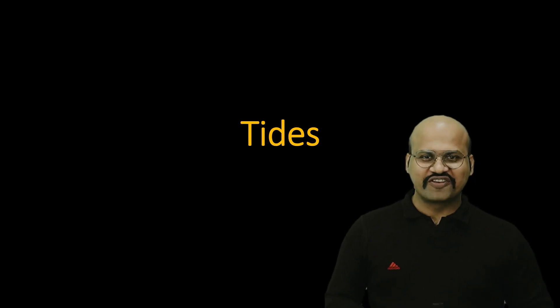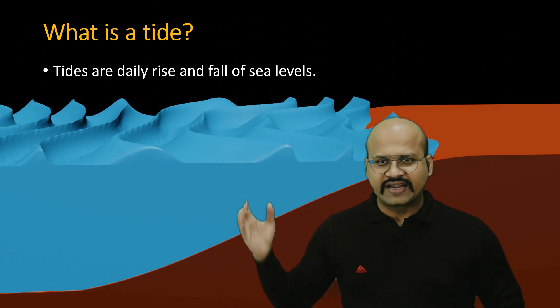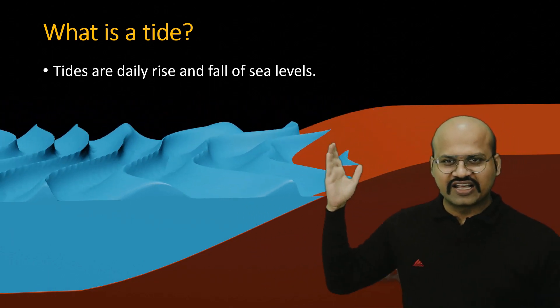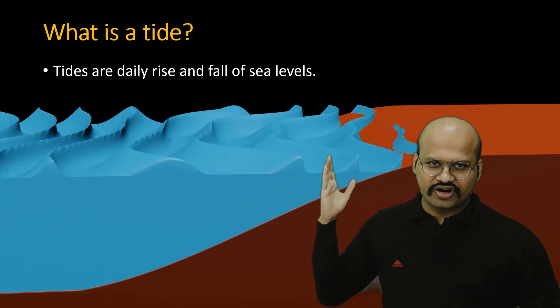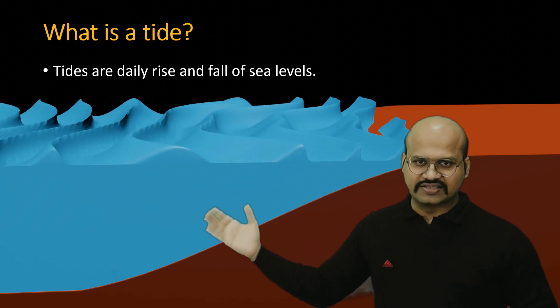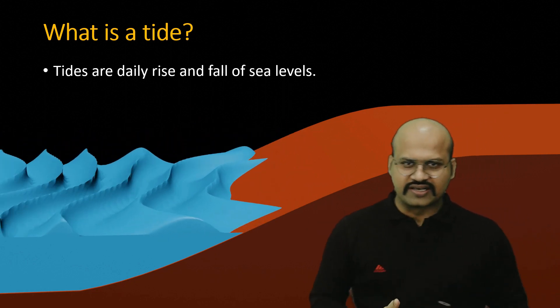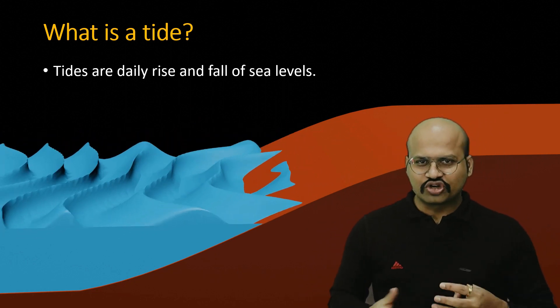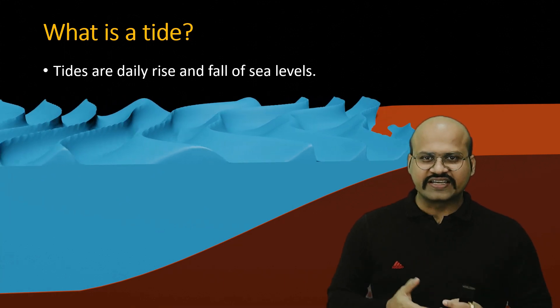Hello friends, welcome to another video of Zeta Axis. Today we will discuss the process of formation of tides. A tide is the increase and decrease in the level of oceans or seas. The ocean level periodically increases and then decreases — it could increase once or twice in a day. This increase and decrease is called a tide.